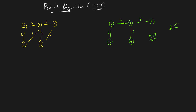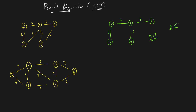Let me do one more example so you understand the algorithm crystal clear before we move to implementation. Take graph g2 and find its minimum spanning tree using Prim's algorithm. Start with the first node, check all adjacent edges, and pick the minimum weight — so you pick that one. Now among these two nodes, check adjacent edges: for node 1, the adjacent edges are 2 and 4; for node 4, the adjacent edges are 5, 3, and 9.